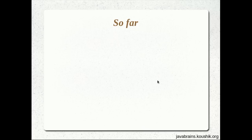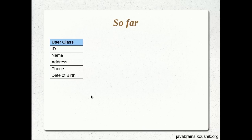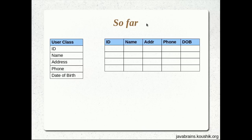So what have we learned so far? We've learned how to write a model object, and we've learned how to annotate various fields in the model object so that Hibernate creates a table for us. And then we do the mapping. We've learned how to save this object into the database, how to retrieve data from the database, and create model objects with the data populated — all using Hibernate APIs.